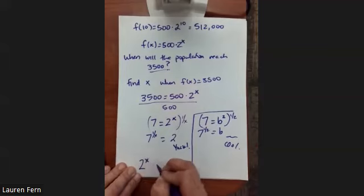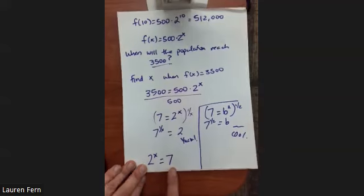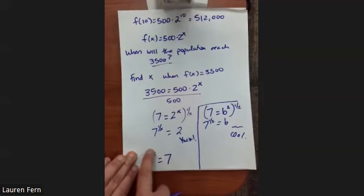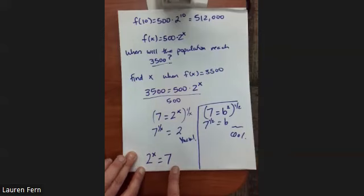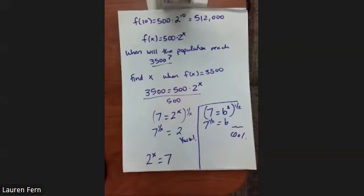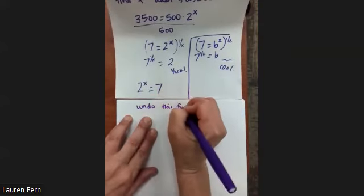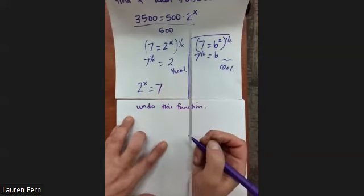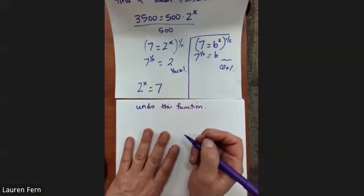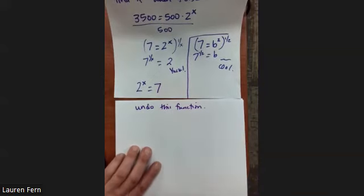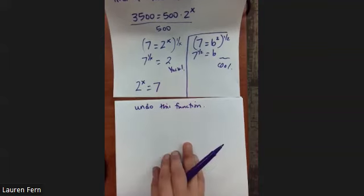Essentially, we have an exponential function on our left side and we want to know when it equals a particular value. Wouldn't it be awesome if we could undo that exponential function? We talked about undoing functions back in Chapter 1 — those were called inverse functions. If your function does something, your inverse function undoes it.